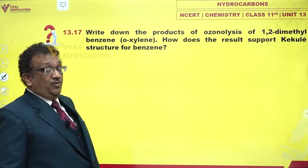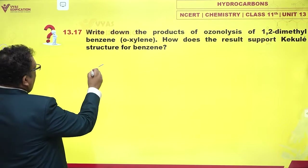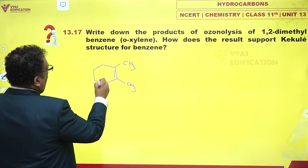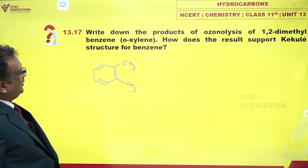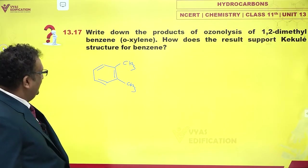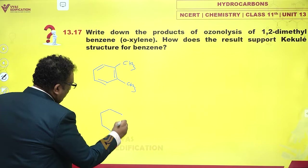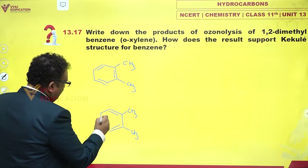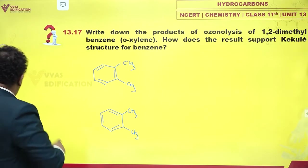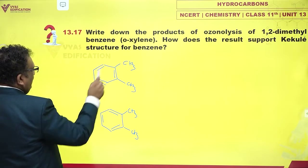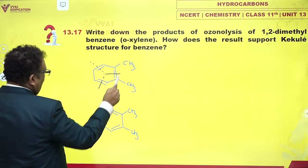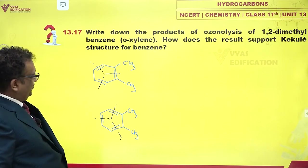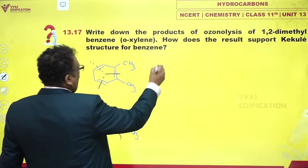Write down the products of ozonolysis of 1,2-dimethylbenzene, that is o-xylene. How do the results support Kekulé structures for benzene? If you just look at the Kekulé structures, there are these two, and very interestingly, if you ozonolize benzene you would discover that you get the actual products as the breakup structures of each of these. What does it mean if this happens to be the structure?